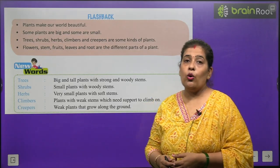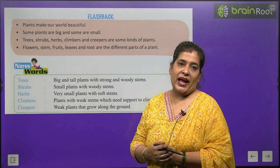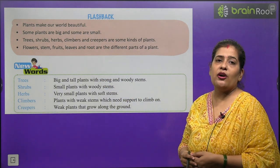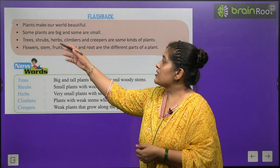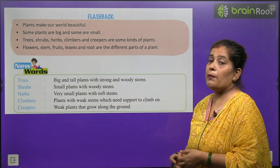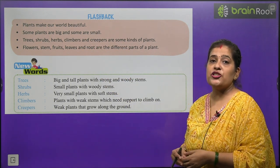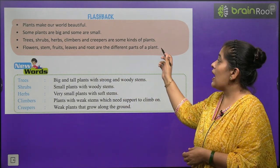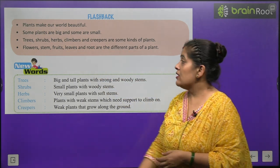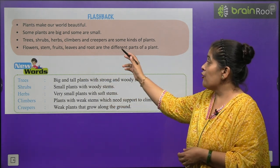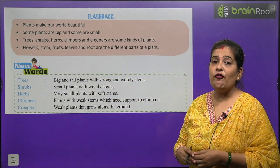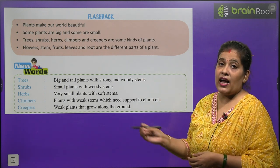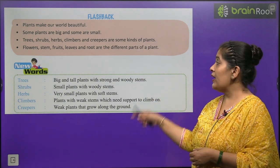Now let's go into flashback — jaldi se ek baar flashback mein jaate hain. Plants make our world beautiful. Some plants are big and some are small. Trees, shrubs, herbs, climbers, and creepers are some kinds of plants. Flower, stem, fruit, leaves, and root are the different parts of a plant — phool, patta, phal, aur tana — yeh paudho ke different parts hain.